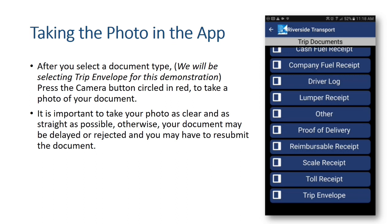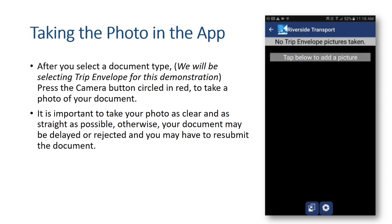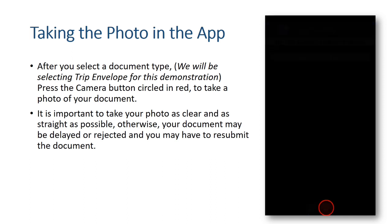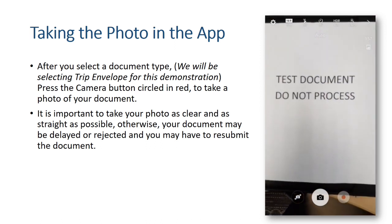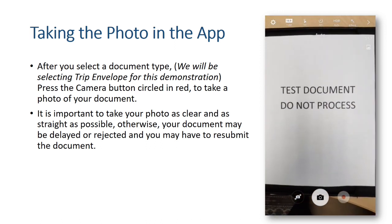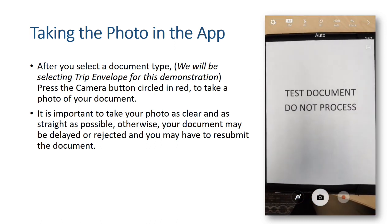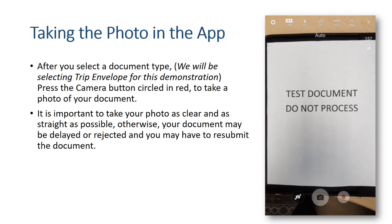After you select a document type — we'll be using the Select TRIP envelope for this demonstration — press the camera button circled in red to take a photo of your document. It is important to take your photo as clear and as straight as possible; otherwise your document may be delayed or rejected and you may have to resubmit.